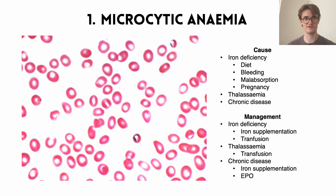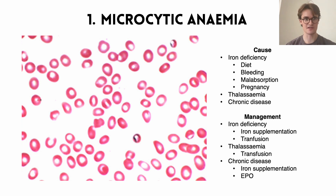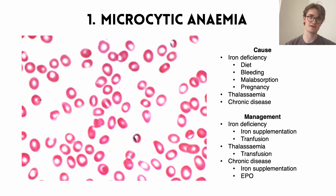Going back to iron deficiency, which is by far the most common cause of microcytic anemia, on the blood smear it can also present with two additional things. The first is anisocytosis — a variation in the sizes of the red blood cells. Looking at this example we can see some that are significantly smaller and some that are larger, instead of all being a very uniform size. The other thing we can see is poikilocytosis — a difference in the shapes or morphologies of the cells. Some look more elongated, and in severe iron deficiency anemia we can even get pencil cells, which are very elongated stick-like red blood cells.